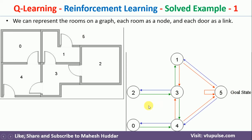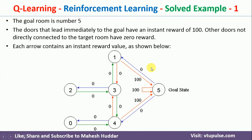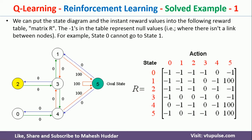We need to identify an optimal path from each and every state to this goal state. One very important thing to remember: any action that leads to the goal state will get an immediate reward of 100. Remaining actions all have a reward of 0. So there are three actions that lead to the goal state, and each gets an immediate reward of 100. Now we will apply the Q-learning algorithm to this state diagram to get the optimal path.